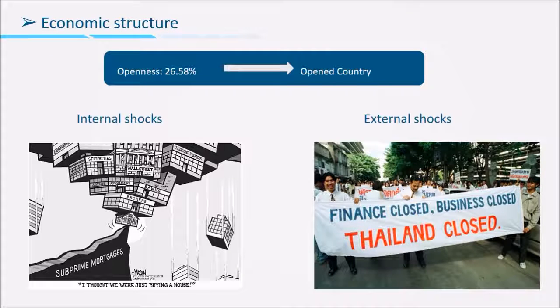The next topic is the economic structure. In 2016, the openness ratio is 26.58%, meaning exports occupy a large part of the American economy. Therefore, we can conclude the USA is an open economy.